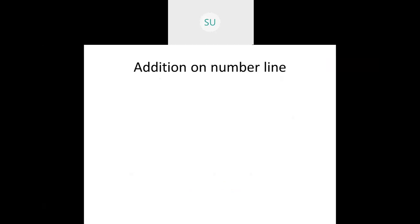So in today's class we will be learning a new method of addition — that is addition on number line. We will use a number line to add two numbers. First of all, what is a number line? A number line is a straight line with numbers written in an order at an equal distance.